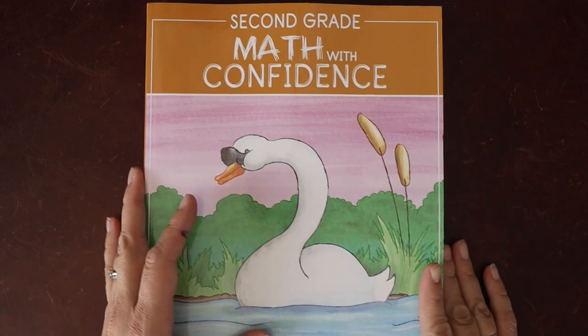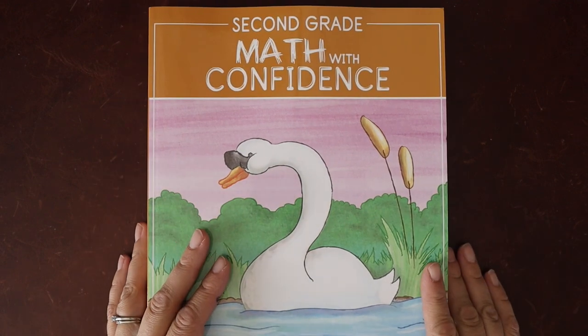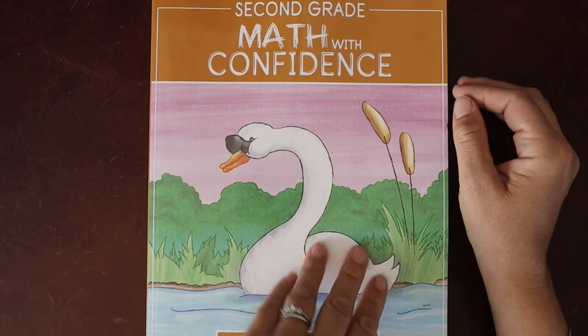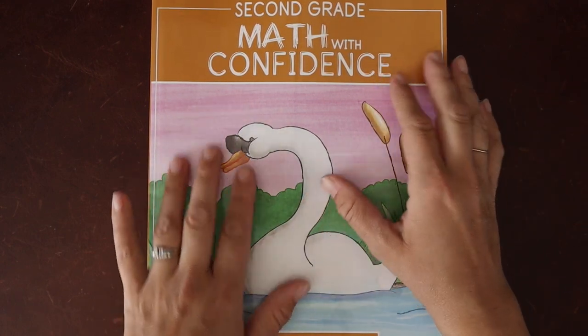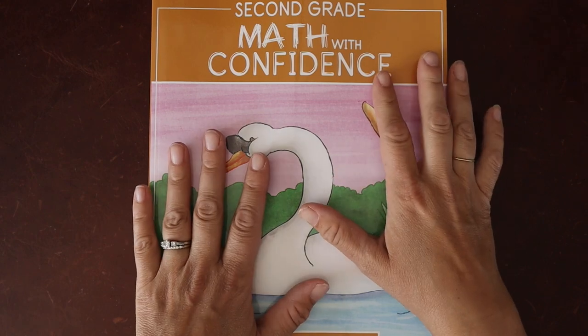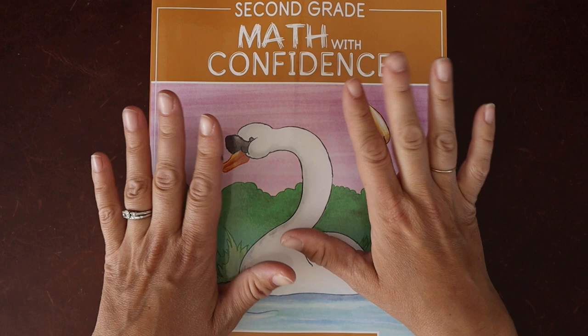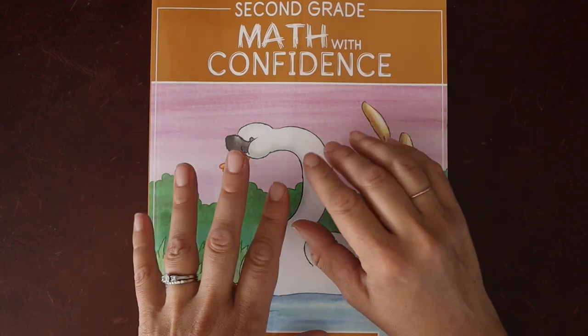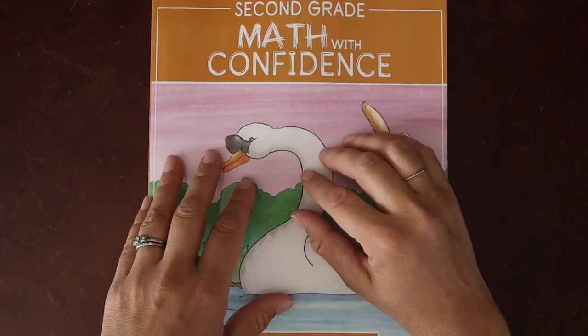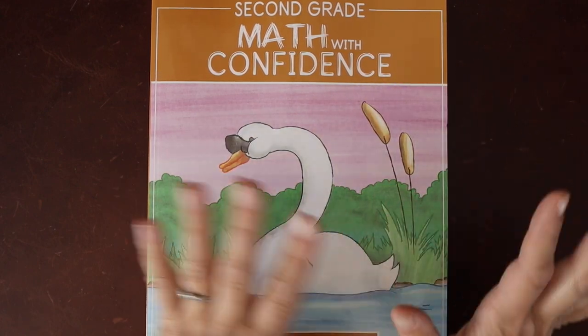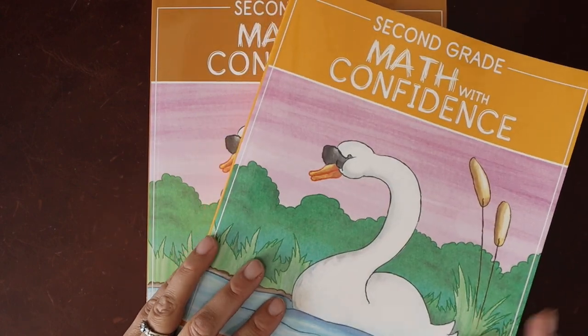A little bit of background about Kate Snow. If you don't know of her, she has been sharing math resources and ideas in the homeschool world for a number of years and a couple years ago started releasing her curriculum Math with Confidence. Kate Snow has a background in math and education with degrees from Harvard, so she is in a unique position to create a curriculum for homeschool parents with the education and the math background.